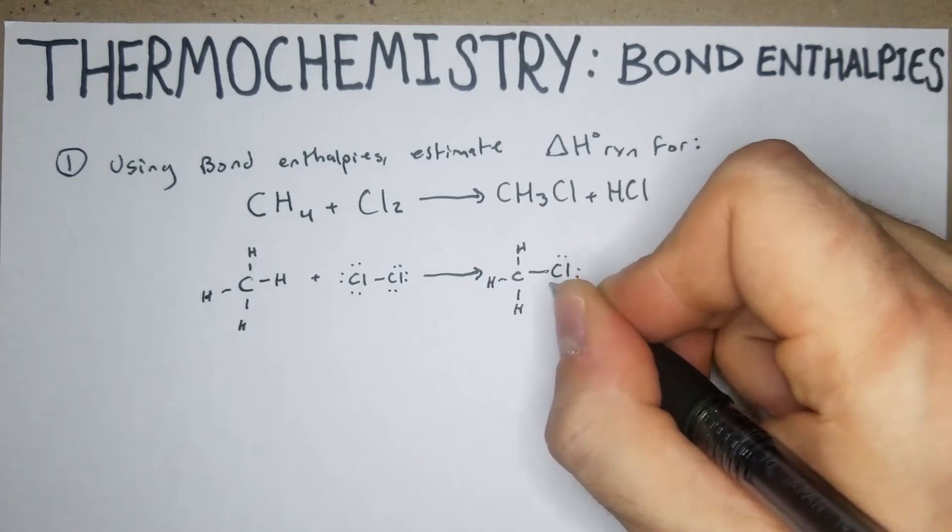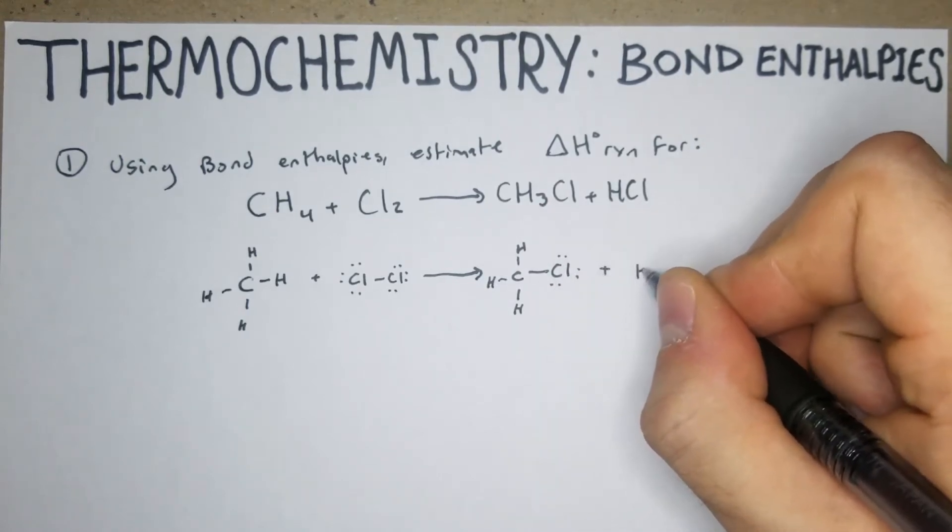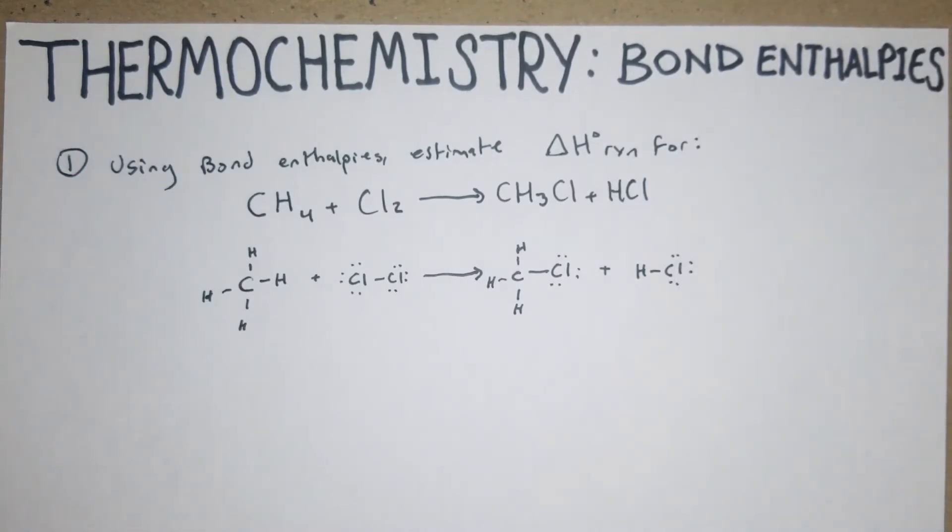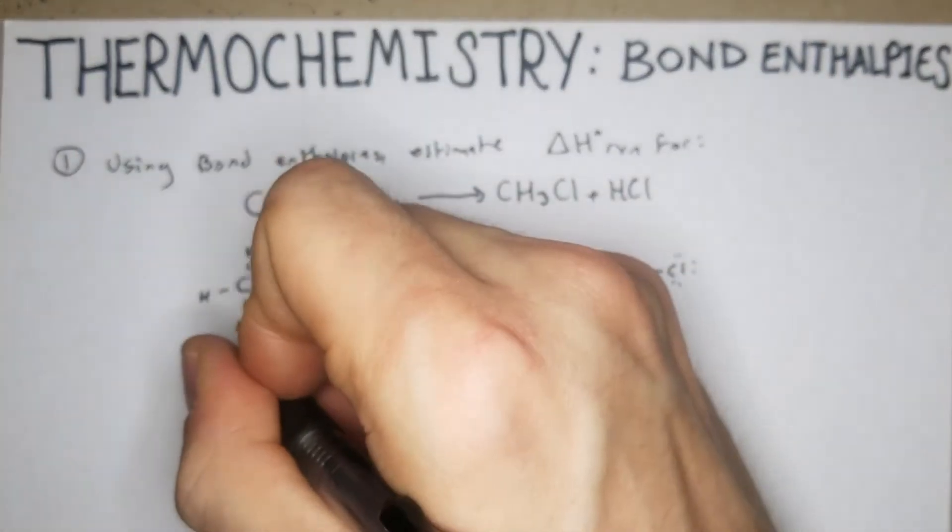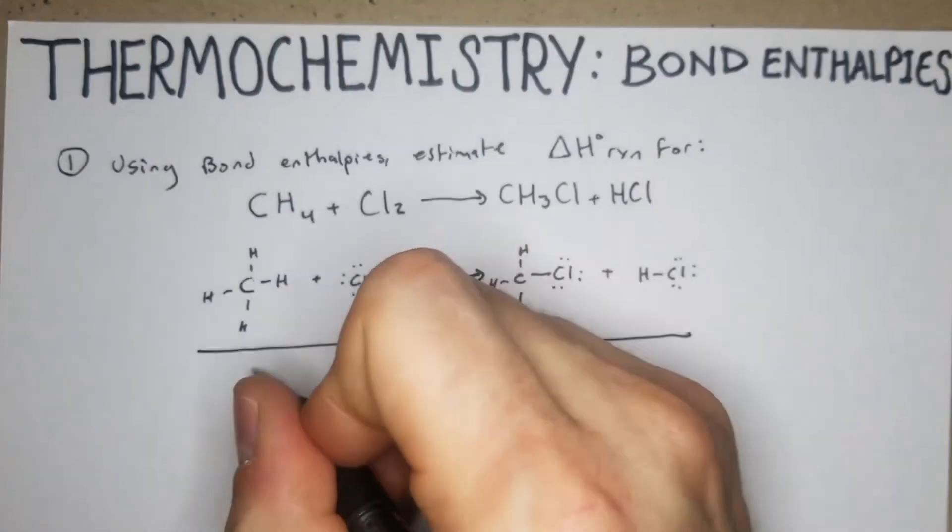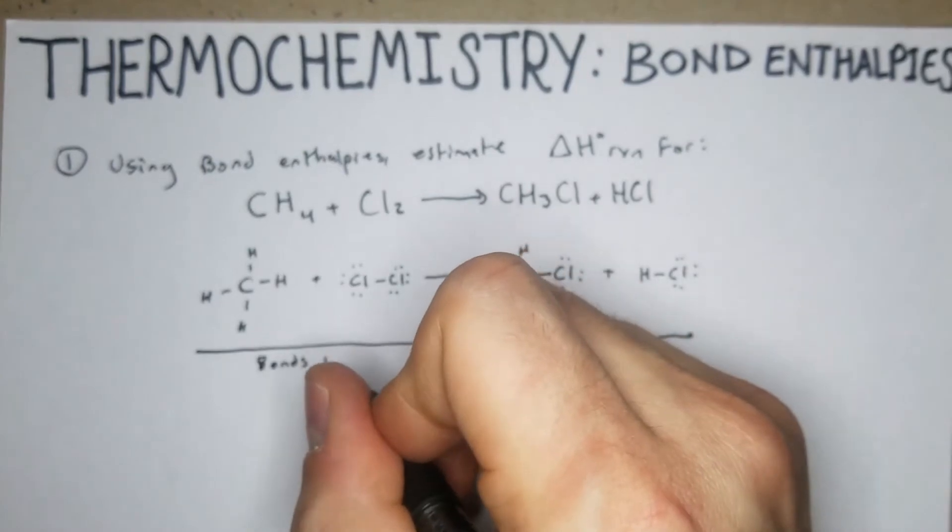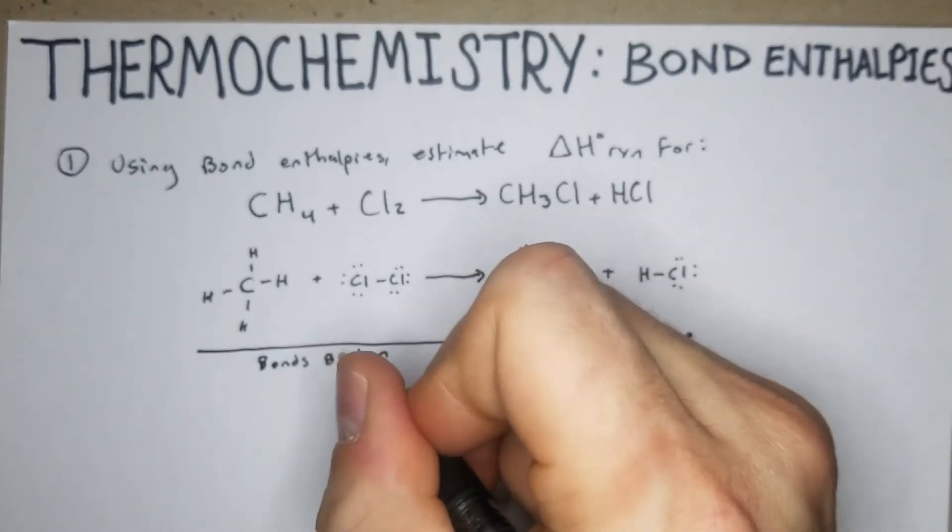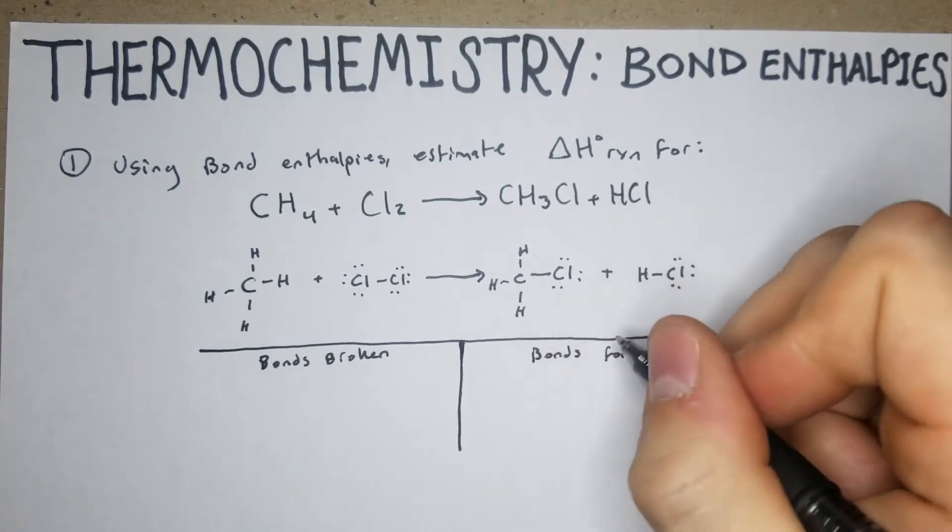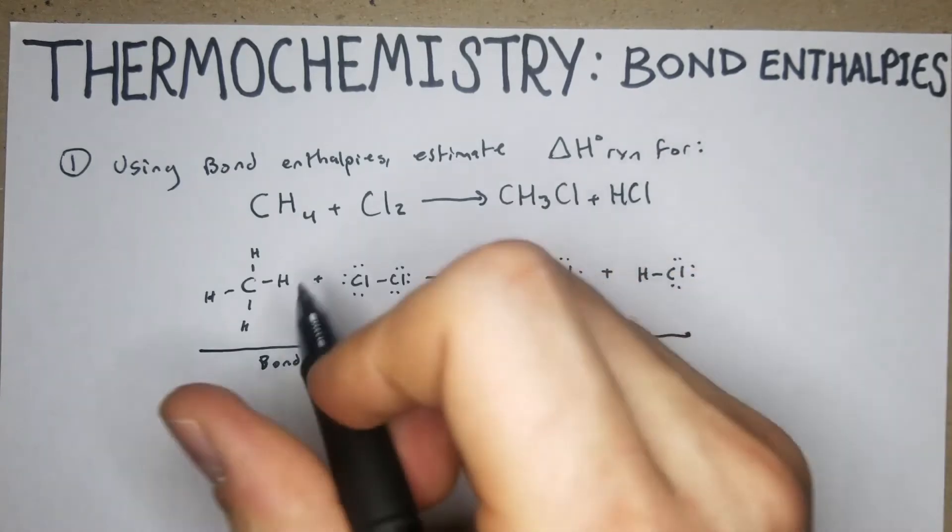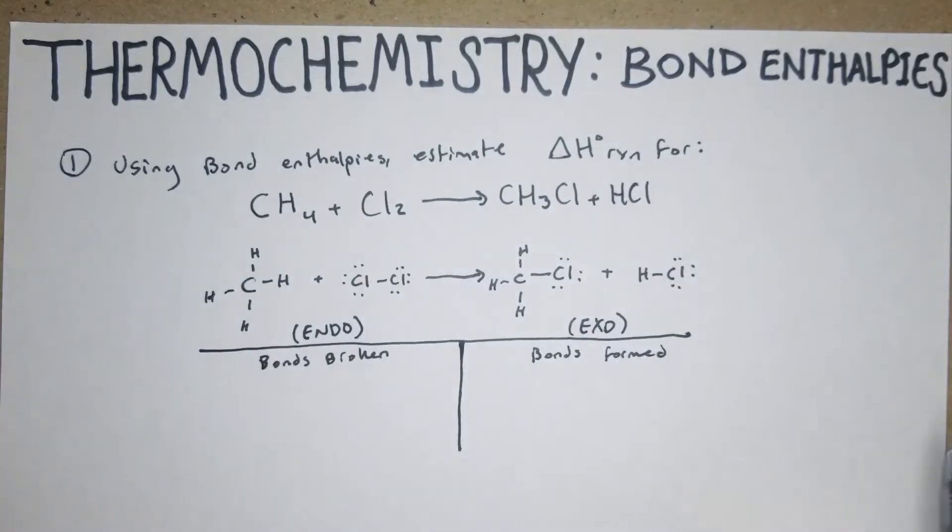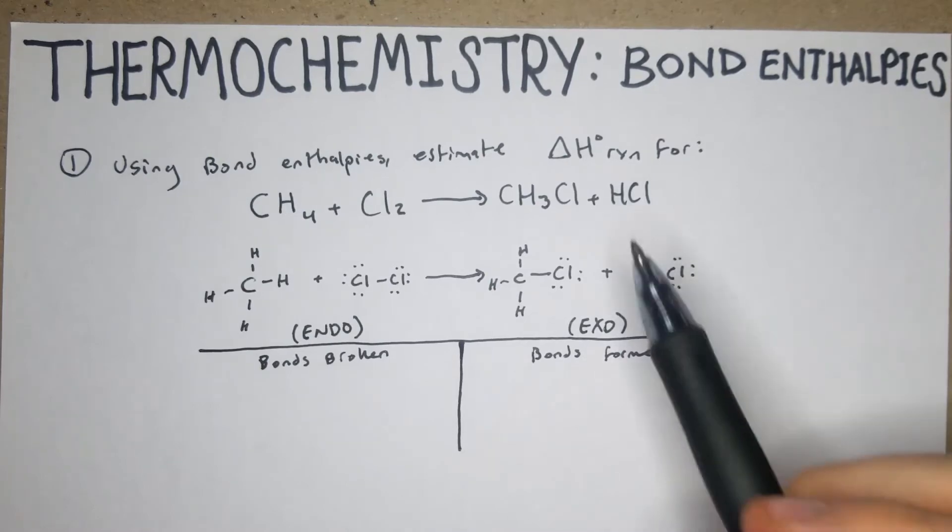It also gives you some practice in envisioning how these molecules are theoretically arranged. So we're going to compare the two sides. I like to set it up just like this, like a chart, and we're going to take bonds broken compared to bonds formed. In other words, endo versus exo, and they'll fight it out to figure out what the enthalpy of the reaction is going to be.